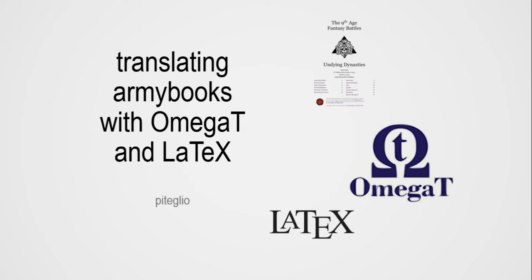I'm by no means an expert in these two software — the reference people are respectively FWening for OmegaT and RU for LaTeX. I just want to give you an overview of how we do it in the Italian translation team, because we think it's a decent way of doing things and maybe we can get feedback and improve. This video has two parts and I'm going to put subtitles in case my English is not that clear.